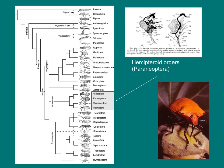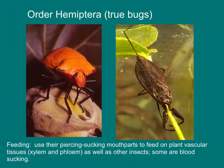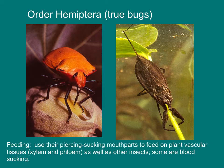We now turn to a group of orders called the Hemipteroid orders. These are all united by the fact that they have stylet-like piercing mouthparts for feeding on plants and other insects. The largest order in this group is the Hemiptera, the true bugs — one of the big five insect orders, comparable in diversity to flies, beetles, butterflies, and Hymenoptera. Hemiptera use their piercing-sucking mouthparts to feed on plant vascular tissues, xylem and phloem, as well as other insects. Some are blood-sucking. Many are aggressive predators that use extra-oral digestion — they inject salivary enzymes into their prey that liquefy the internal organs, then drink the liquefied organs through their straw-like mouthparts.